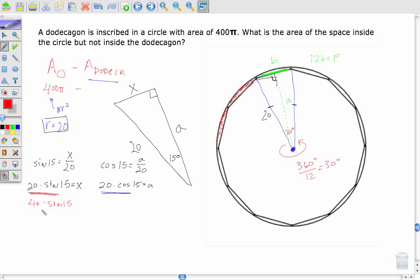And then I also need this to actually be the perimeter if I want to use my area formula for a regular polygon. So there are 12 sides in this shape. So let's make that 12 times 40, or 480 times sine of 15.